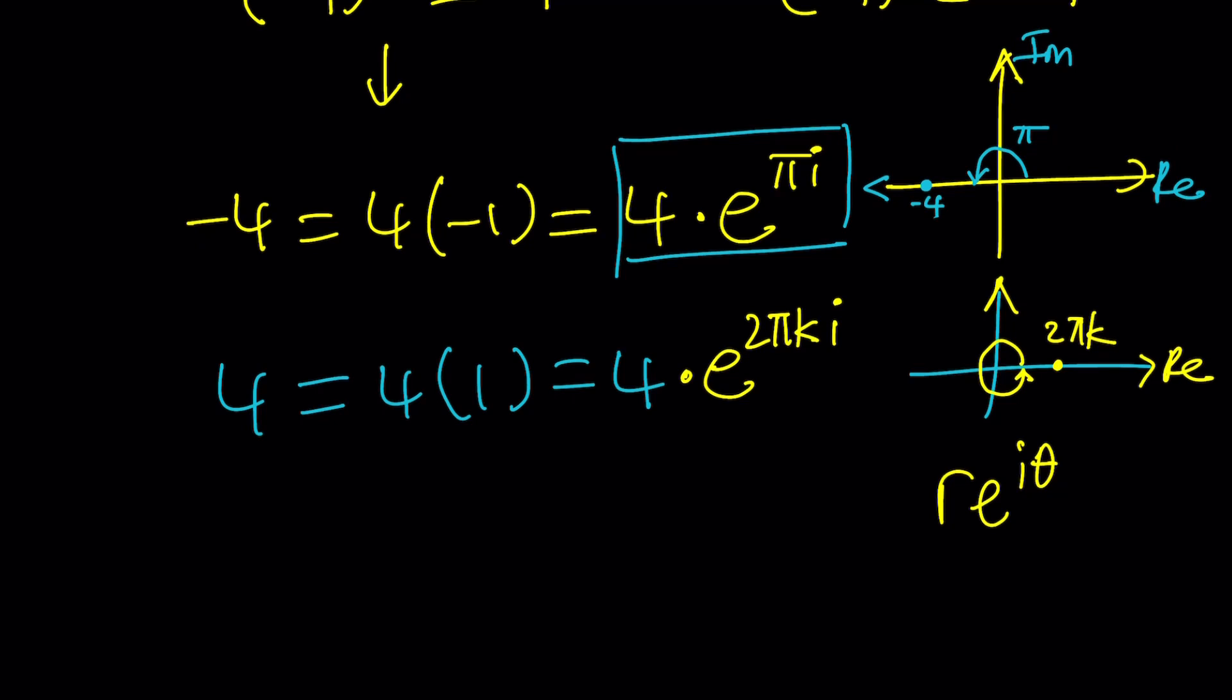So, whenever you have something like w to the power z, of course, in standard form, it will be probably z to the power w is more common. But since our exponent is z, I want to stick to that. Basically, w to the power z can be written as e to the power z ln w. Make sense? Okay.